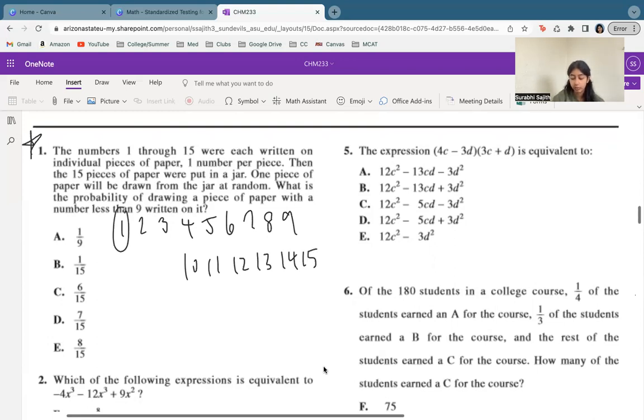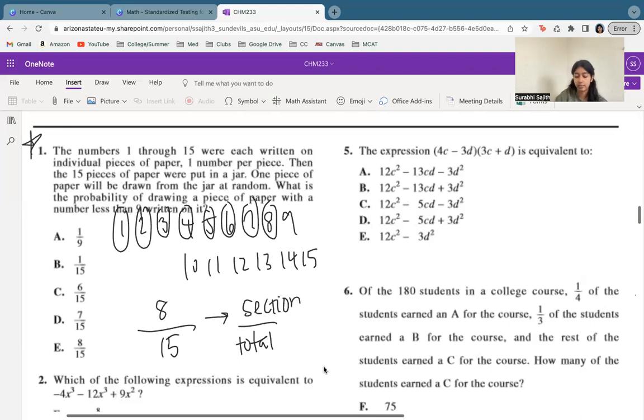So we want 1, 2, 3, 4, 5, 6, 7, and 8. We do not want nine included. So now we know that there are eight options and out of total we have 15. So when we're doing a fraction, we've got our total on the bottom and then the section that we're looking for on top. So in this case, 8 over 15 is our final answer.